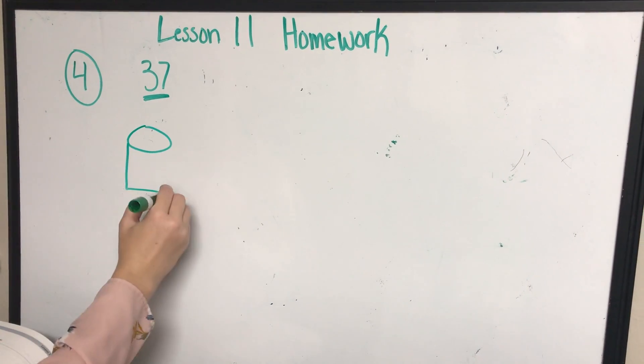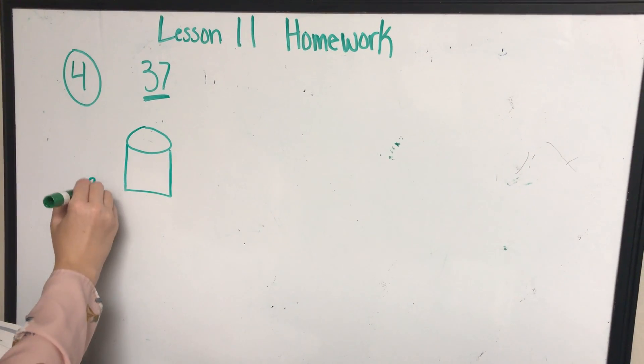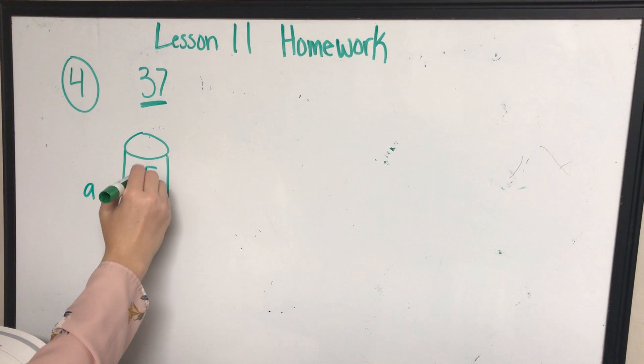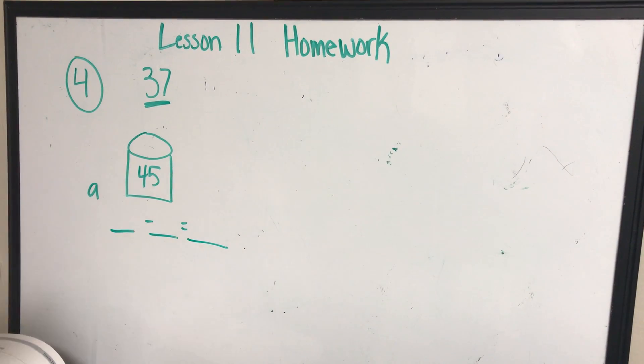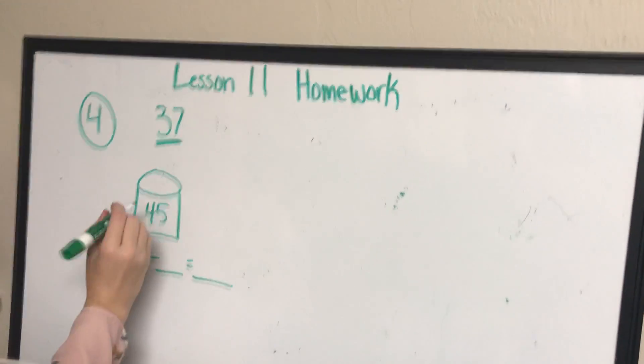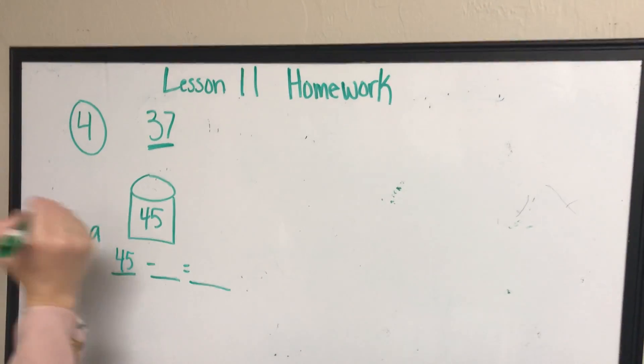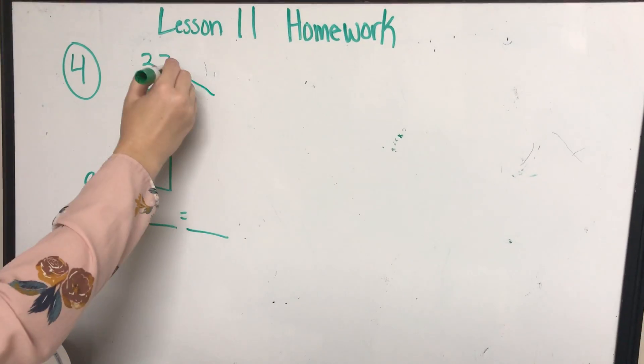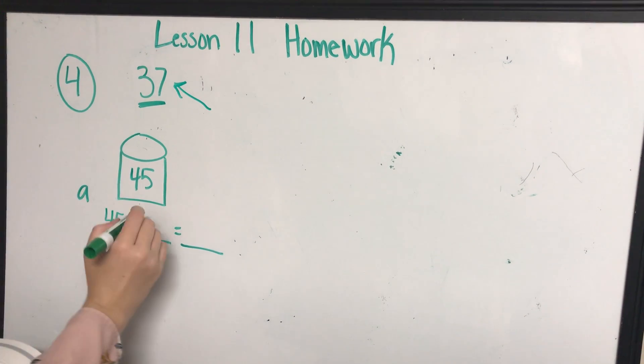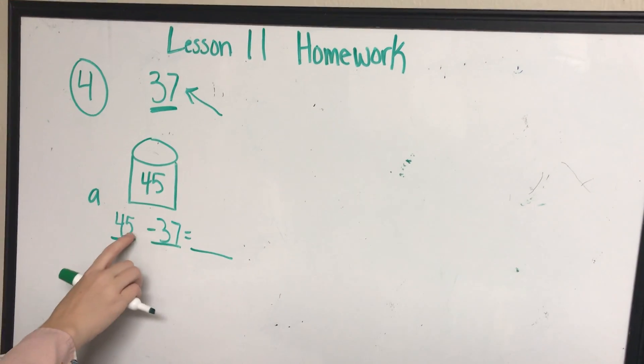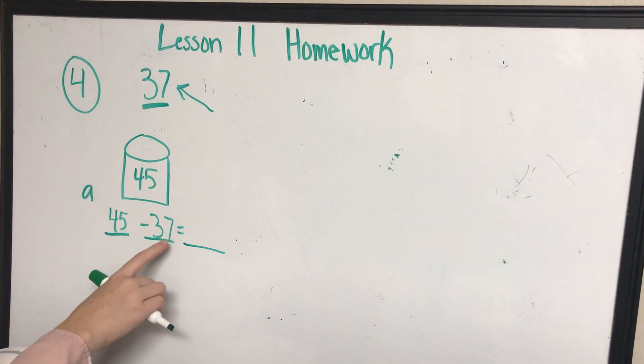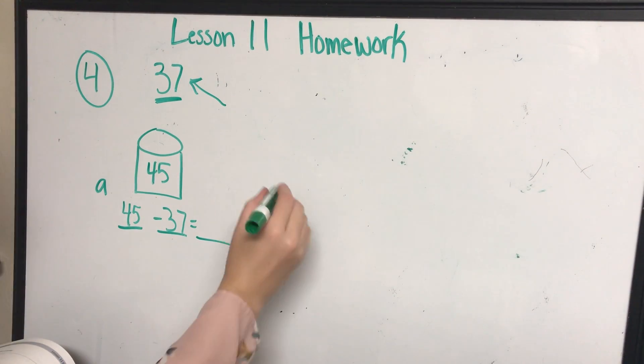So on our paper, we have something like this. This is A. It says 45, and then we have blank minus blank equals what? So the word problem told us we started out with the number on the jar, so we should write that down. How many did Miss Clark take away from each one? 37. We now have to find the answer. Can I do five minus seven with my ones in my head? No, I'm going to need a picture.